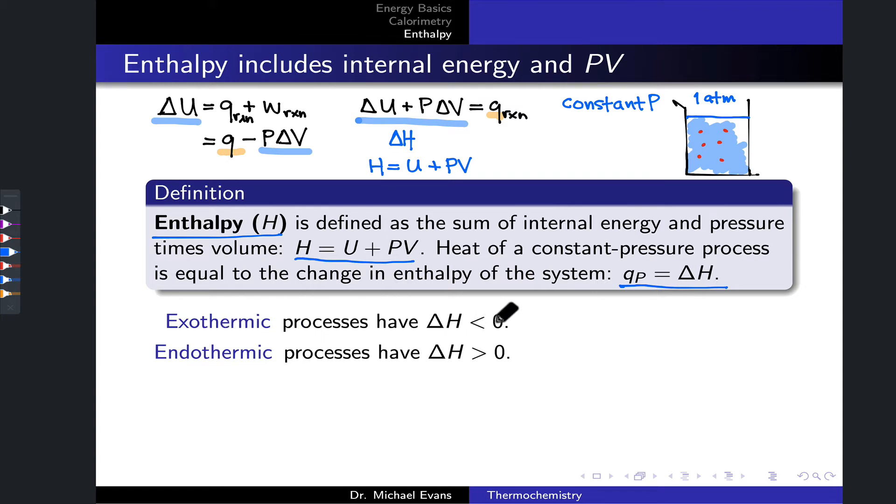Exothermic processes have negative delta H. And we can relate this back to QP, the heat transfer, right? QP is also negative since delta H is equal to QP for the constant pressure process.